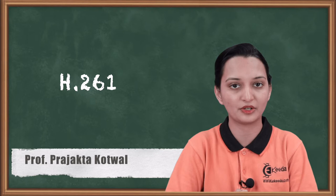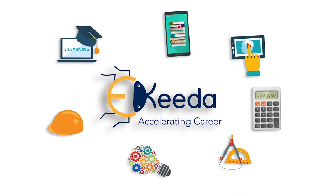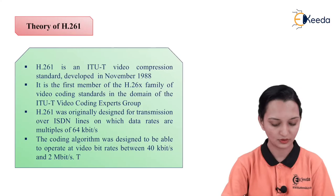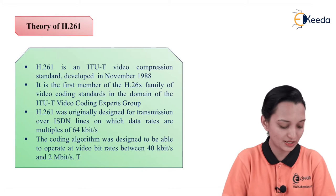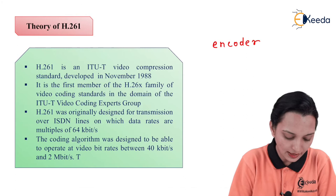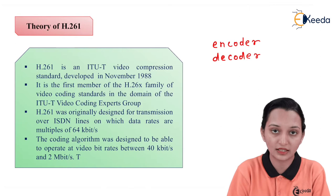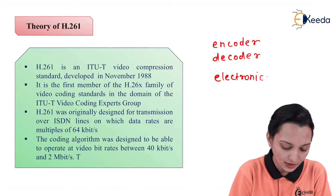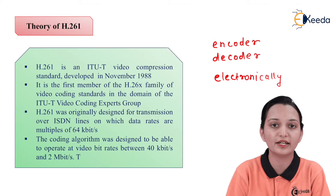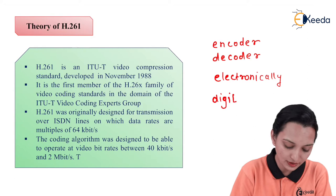In this video lecture, we will try to understand a basic part of encoder and decoder in MPEG, known as H.261. H.261 is an encoder and decoder type that performs the process of encoding as well as decoding of data — specifically data which can be transmitted electronically. The basic purpose behind the development of H.261 is digital encoding.